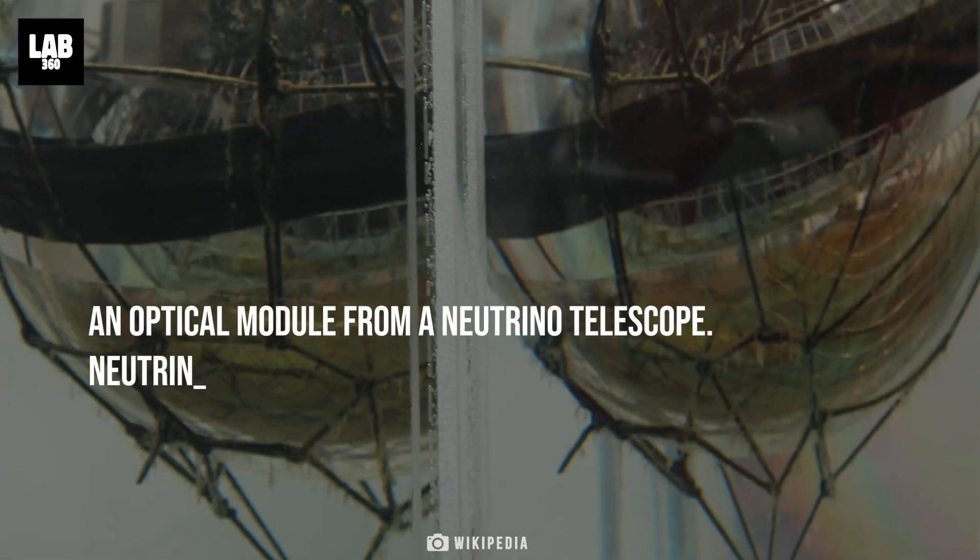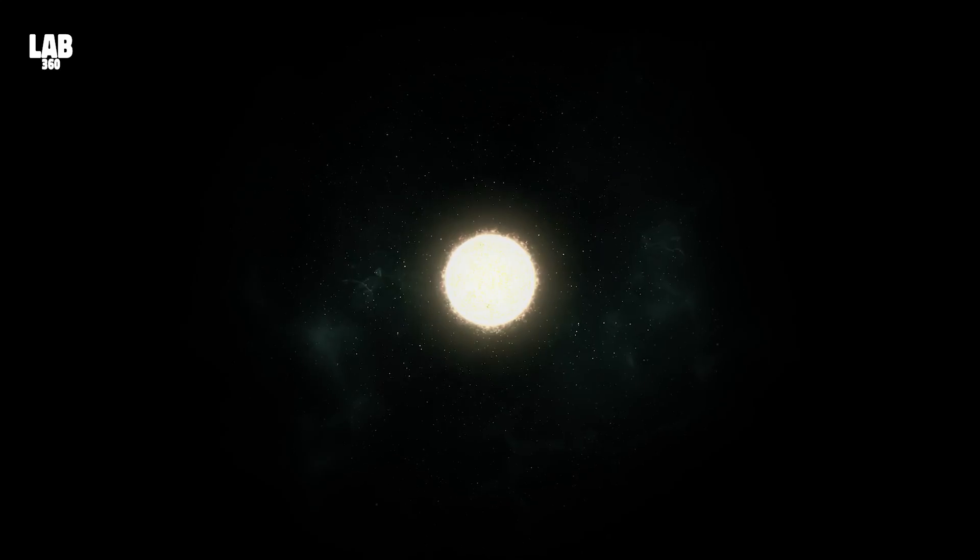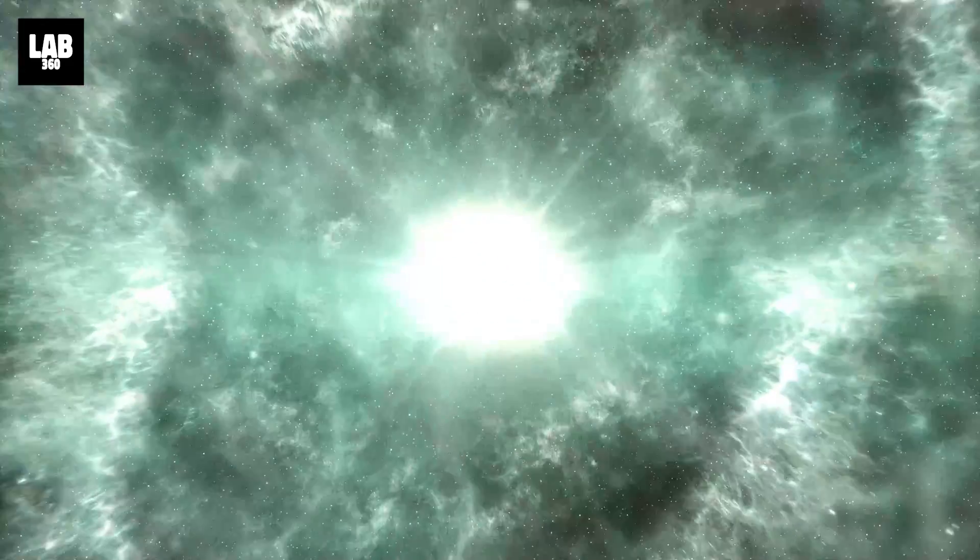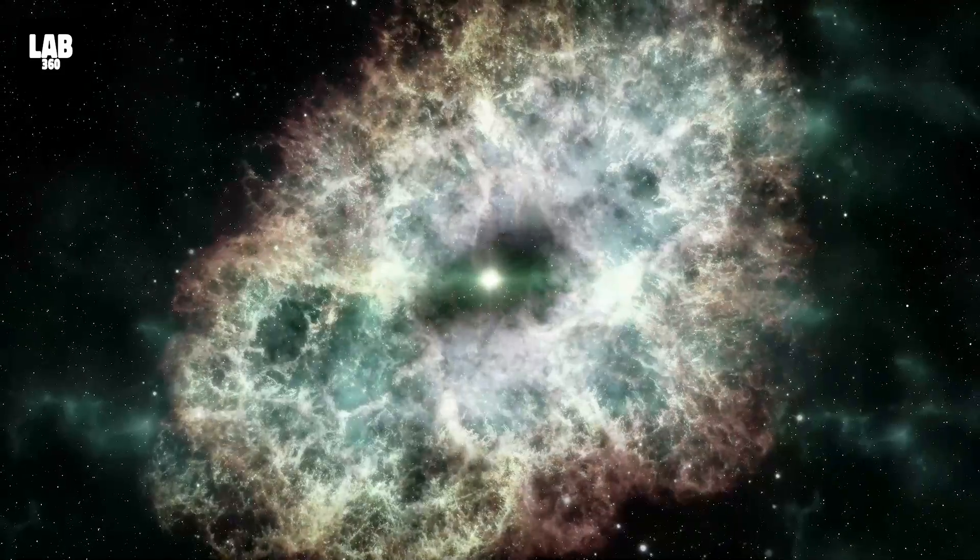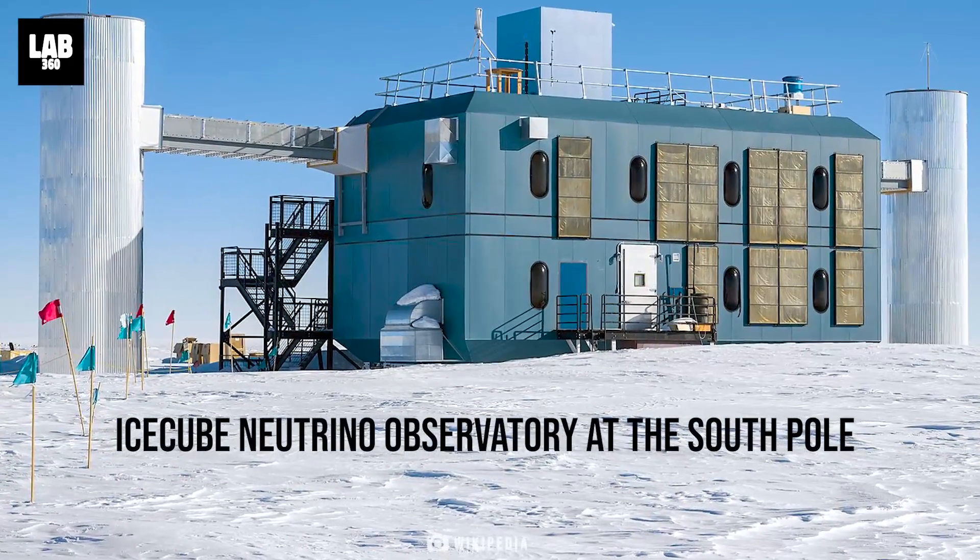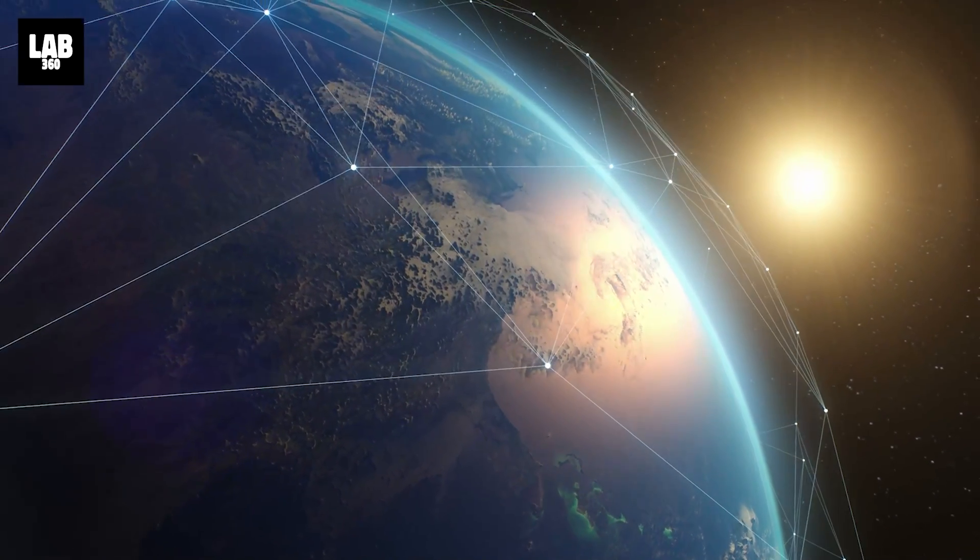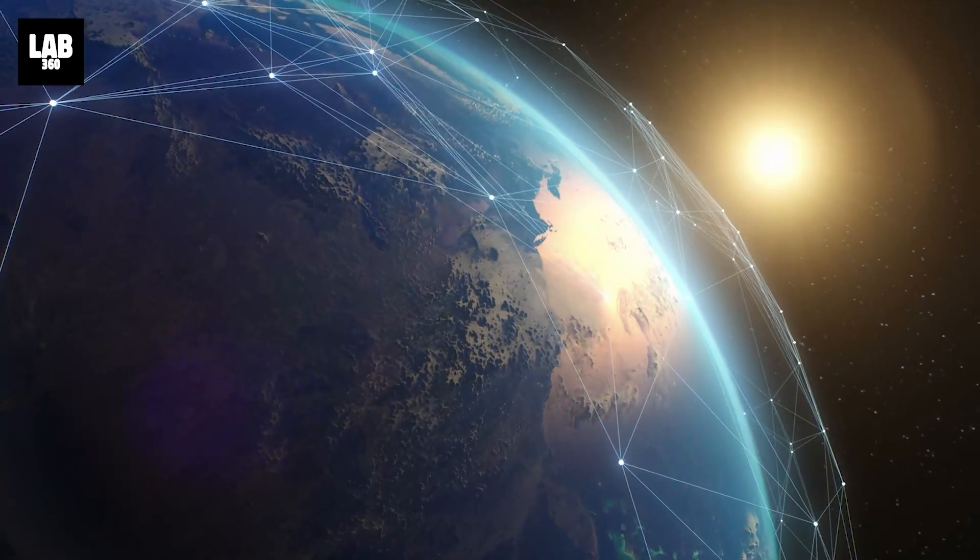The solution to that is to use neutrino telescopes, as neutrinos are released in enormous quantities in a supernova explosion and they can pass freely through the dust. We are now armed with many neutrino telescopes dotting the Earth, for example the supernova early warning system, the SNUS, which is a network of neutrino detectors.